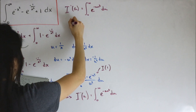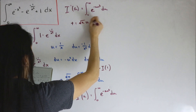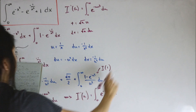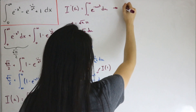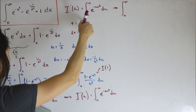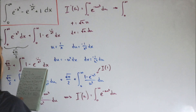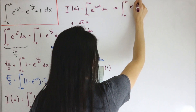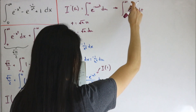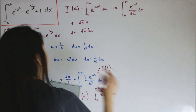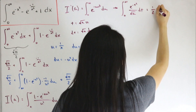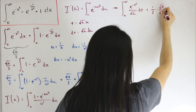Now we do another substitution: let t equal the square root of a times u, so dt equals the square root of a times du. Substituting back, the bounds remain zero to infinity, and the integral becomes the integral from zero to infinity of e to the negative t squared, times one over the square root of a, dt. Since this is the Gaussian integral regardless of the dummy variable, this yields one over the square root of a times the square root of pi divided by two, giving I prime of a equals square root of pi divided by two times square root of a.